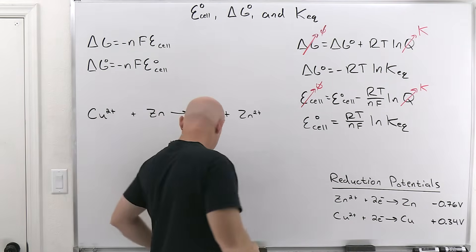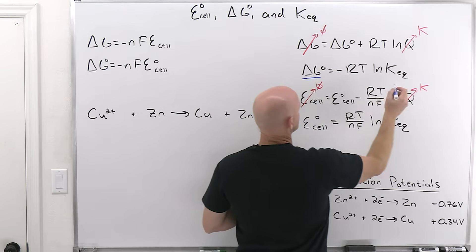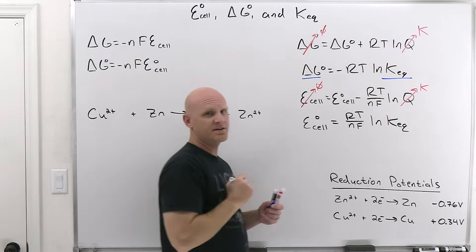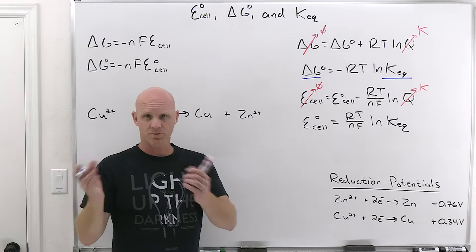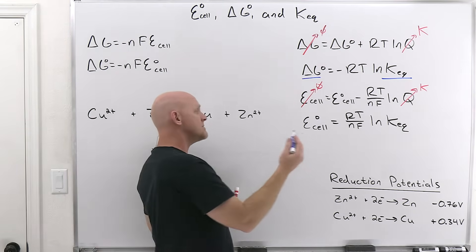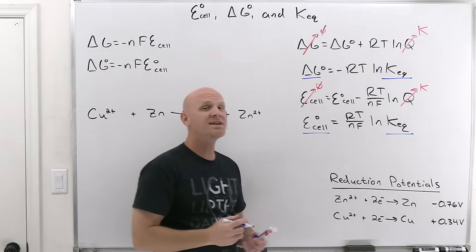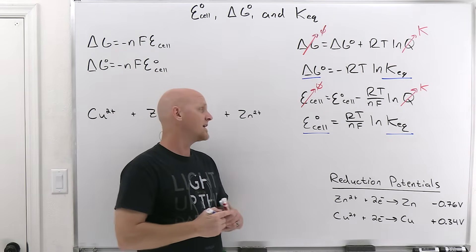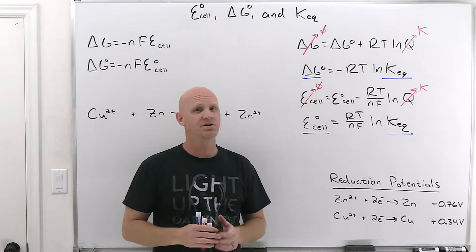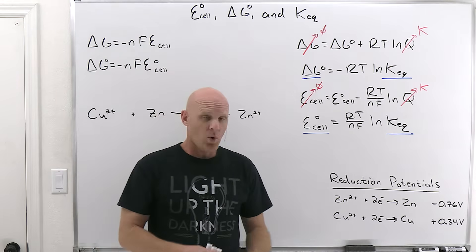And so notice that this first one up here relates delta G standard to the equilibrium constant. You know one, you can calculate the other, assuming you know what temperature it applies to. Same thing now with your standard E cell value and your equilibrium constant. You know one, you can calculate the other as well. Again, assuming you know what temperature you're referring to.